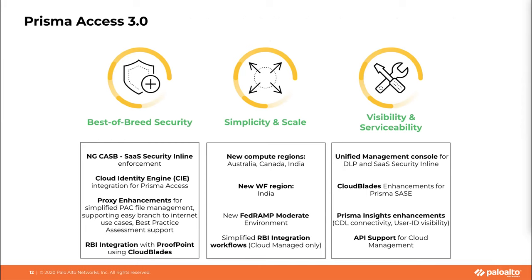Prisma Access 3.0 is the only solution that protects all apps with best-in-class security while driving an exceptional user experience. The new next-gen CASB functionality automatically keeps pace with SaaS solutions with proactive visibility, real-time data protection, and best-in-class security. 3.0 provides simplicity and scale with new compute regions, WildFire regions, and RBI integration workflows. It also provides visibility and serviceability through a unified management console for DLP and SaaS security, Prisma Access Insights enhancements, single connectivity, and user ID visibility.